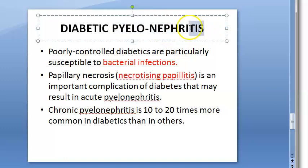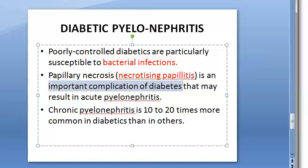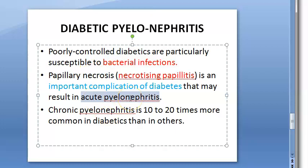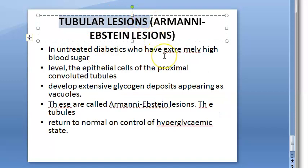Diabetic pyelonephritis involves inflammation of the nephron. Diabetics are very prone to bacterial infections, so pyelonephritis can occur. An important complication is papillary necrosis (necrotizing papillitis), which is a significant complication of diabetes. This leads to acute and chronic pyelonephritis.